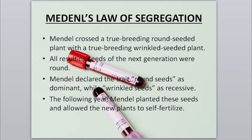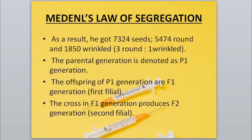Mendel then allowed those F1 seeds to self-fertilize. The result was 7324 seeds, of which 5474 were round and 1850 were wrinkled, giving a ratio of 3 round to 1 wrinkled. The generation in which round was crossed with wrinkled is called the Parental generation, and its offspring is called the First Filial generation.